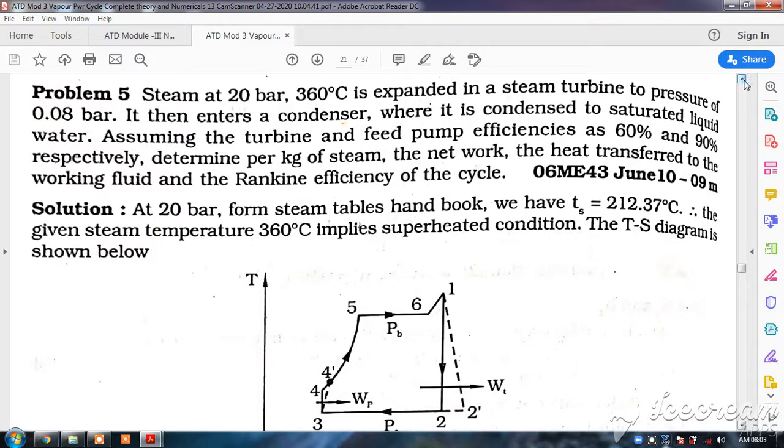Now we look at the fifth numerical on vapor power cycle. Steam at 20 bar is expanded in a steam turbine to a pressure of 0.08 bar. It then enters a condenser where it is condensed to saturated liquid water.